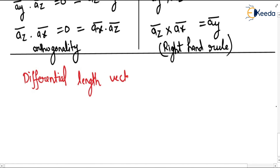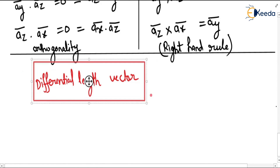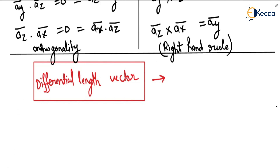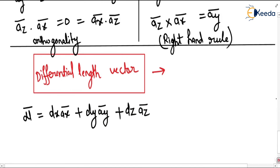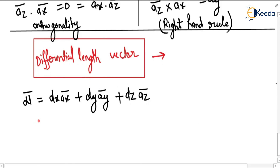Now we can define the differential length vector dL. It is defined as dL vector equals dx·ax plus dy·ay plus dz·az, where dx is a small change in the x direction, dy is a small change in the y direction, and dz is a small change in the z direction.